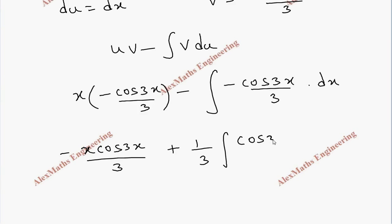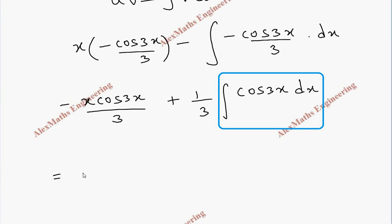Now this part alone we can perform the normal integration and the rest of the terms we are going to write as it is. So we have minus x cos 3x by 3 plus 1 by 3.